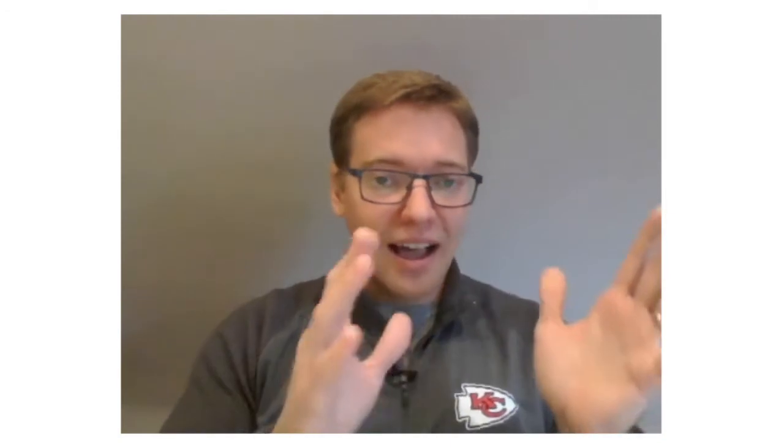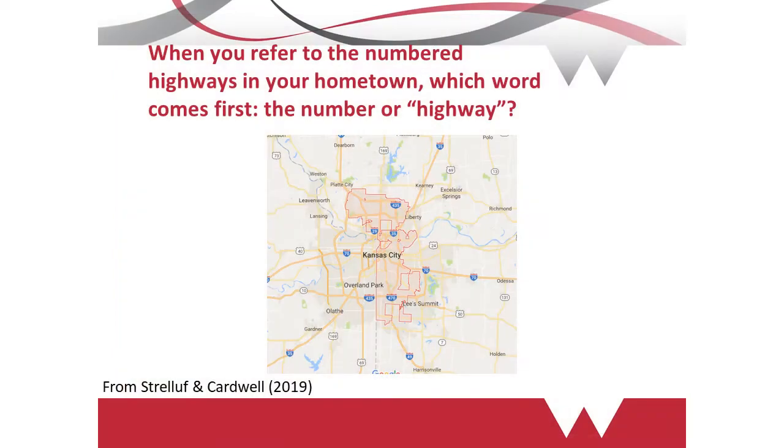I've done some of this lexical research in the area of the United States where I used to work. Conventionally in the United States, if you have a numbered highway, you refer to that as 'highway' and then the number — for instance, Highway 24. In the area I was working, Kansas City, some people refer to roads as the number and then the highway, so rather than Highway 24, the local lexical item might be '24 Highway.' The area where I was working — Kansas City — has the city itself as the darker space, and the general urban area in gray, plus Kansas City. There is a river that runs through the middle of the community.